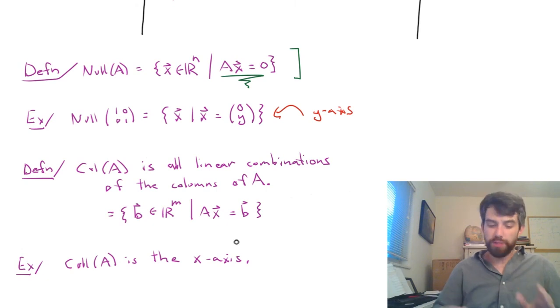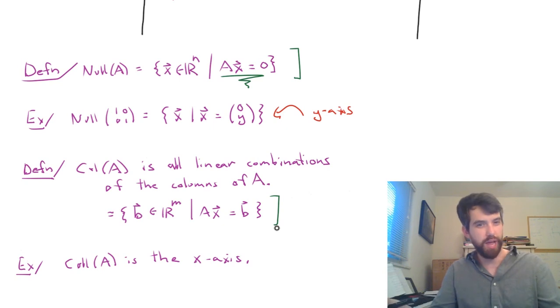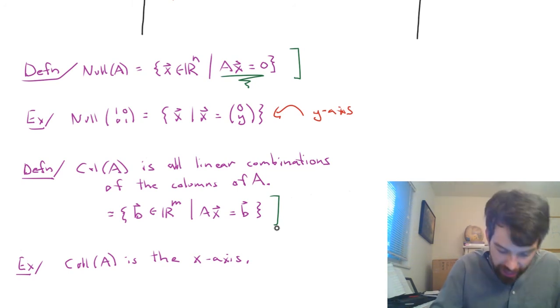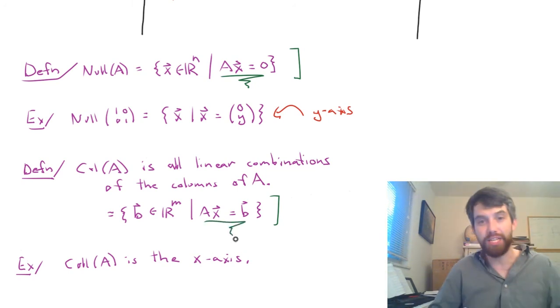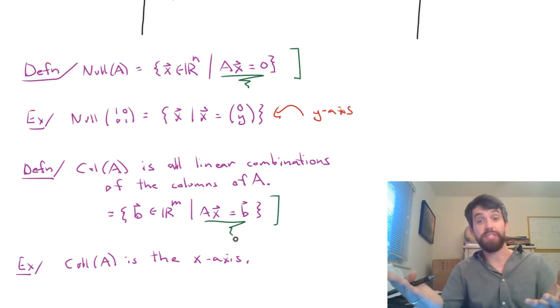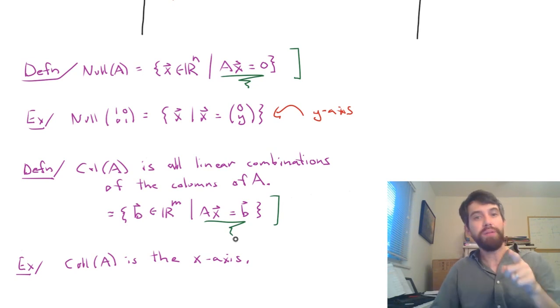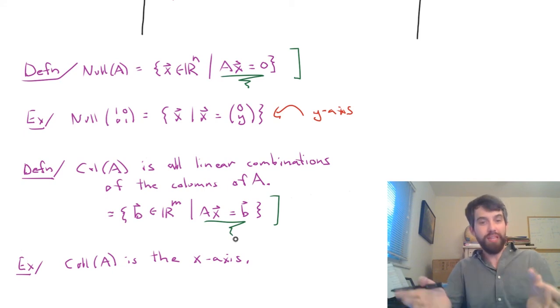Now for the column space, we don't have quite such a clean answer. I can't easily just describe the entire column space the way I can for the null space because I really know how to solve Ax equal to zero. What I can do for the column space, however, is it is defined by the equation Ax equal to B and we've studied that many times. So if I give you any B and I've given some matrix A, you should be able to tell me is B inside of your column space or is it not inside of your column space.